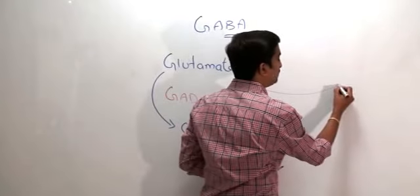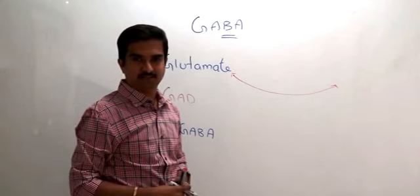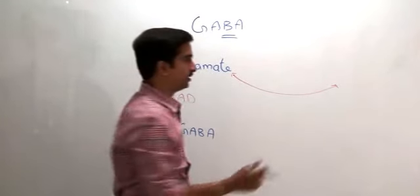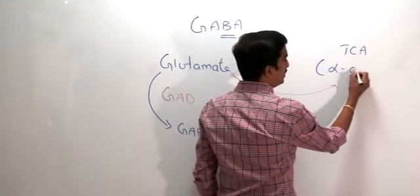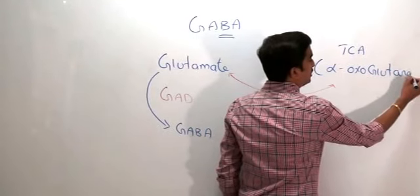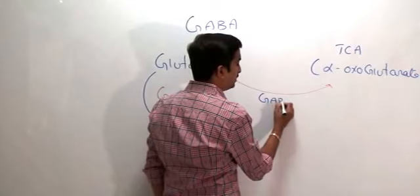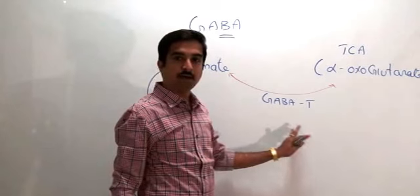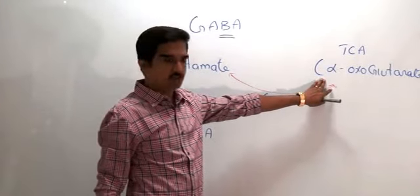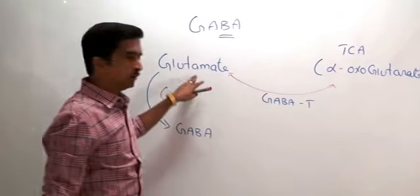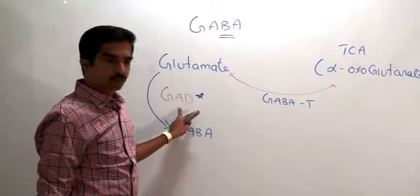This glutamate is obtained from alpha-oxoglutarate, a compound of the tricarboxylic acid cycle. GABA-T, known as GABA-transaminase, is the enzyme responsible for the conversion of alpha-oxoglutarate to glutamate. Then glutamate is converted to GABA by the enzyme GAD.